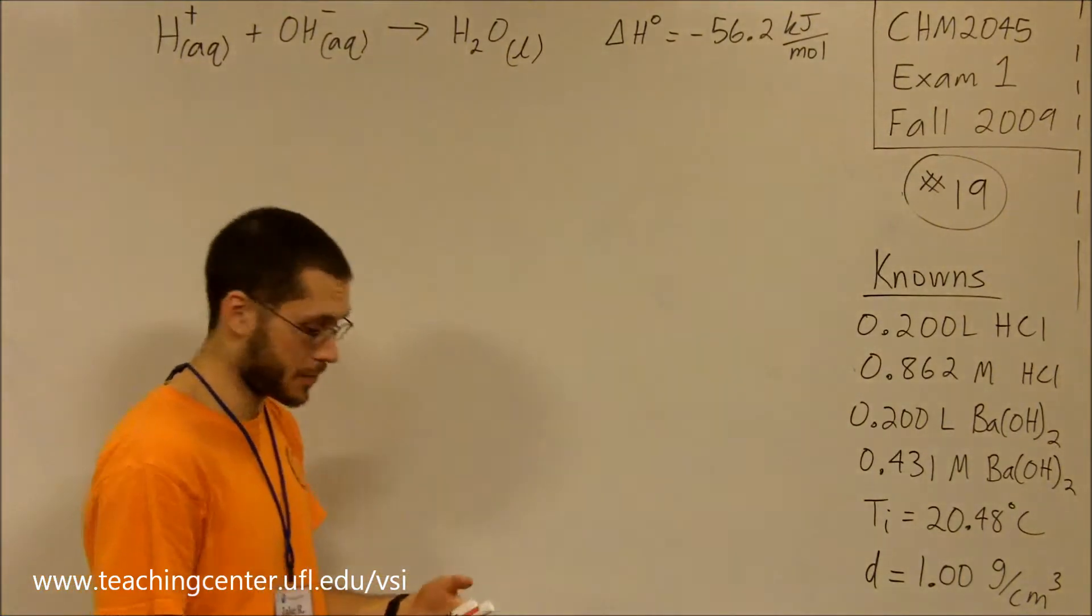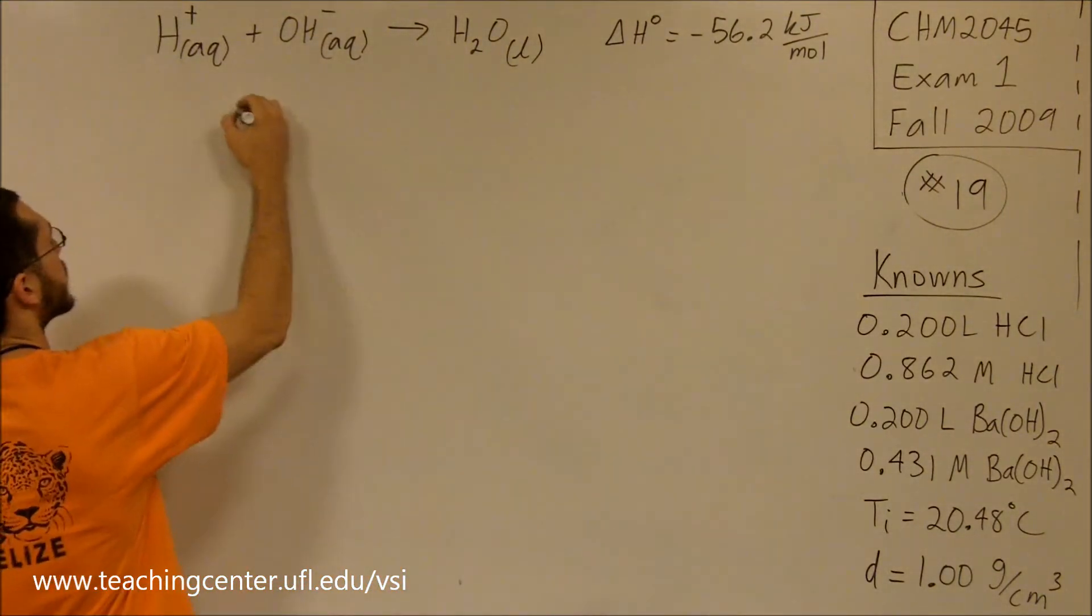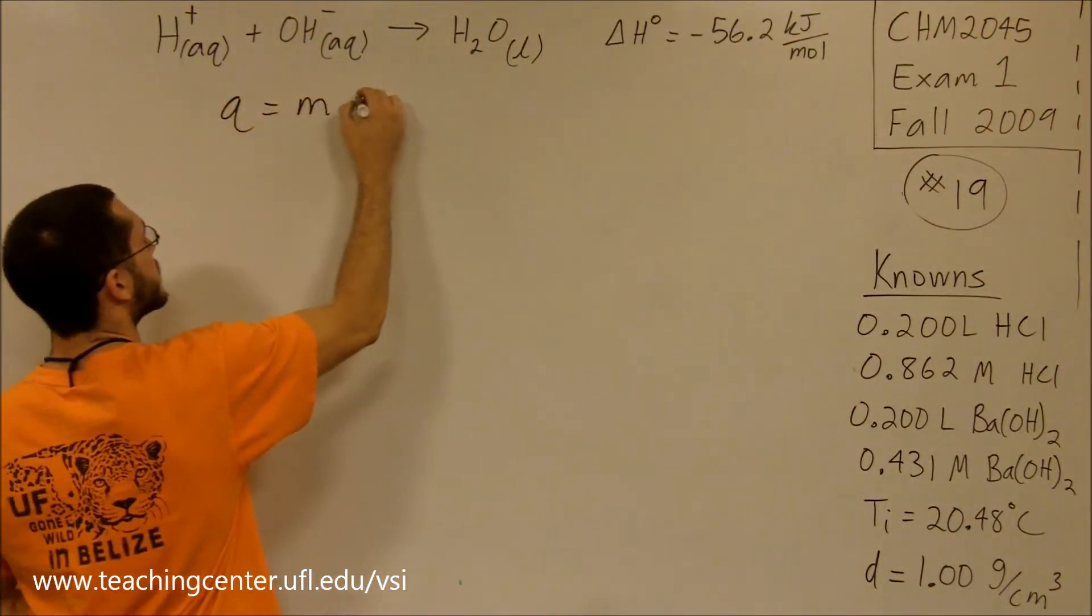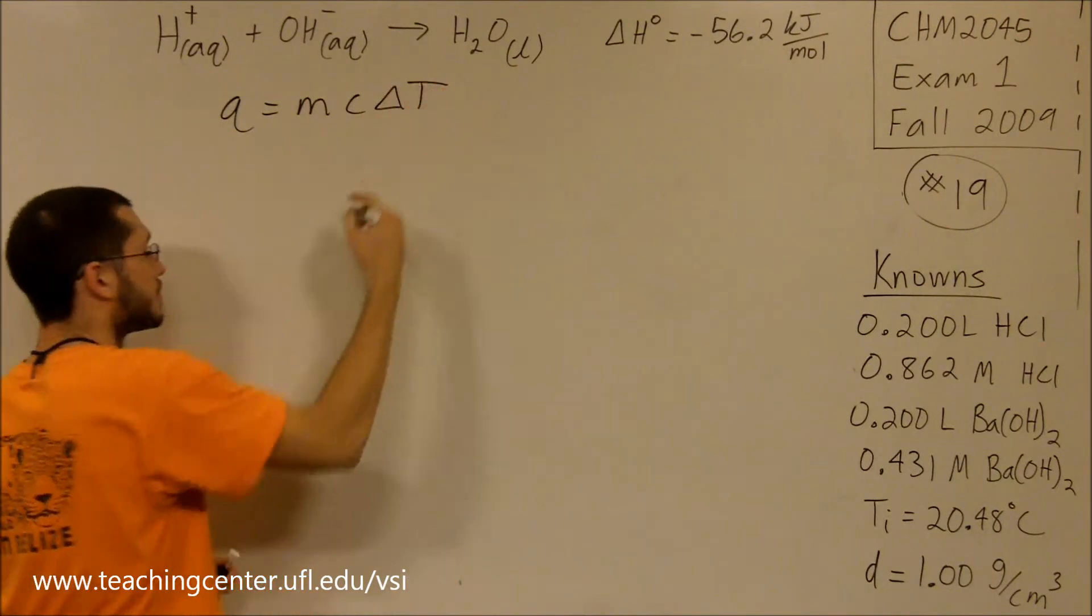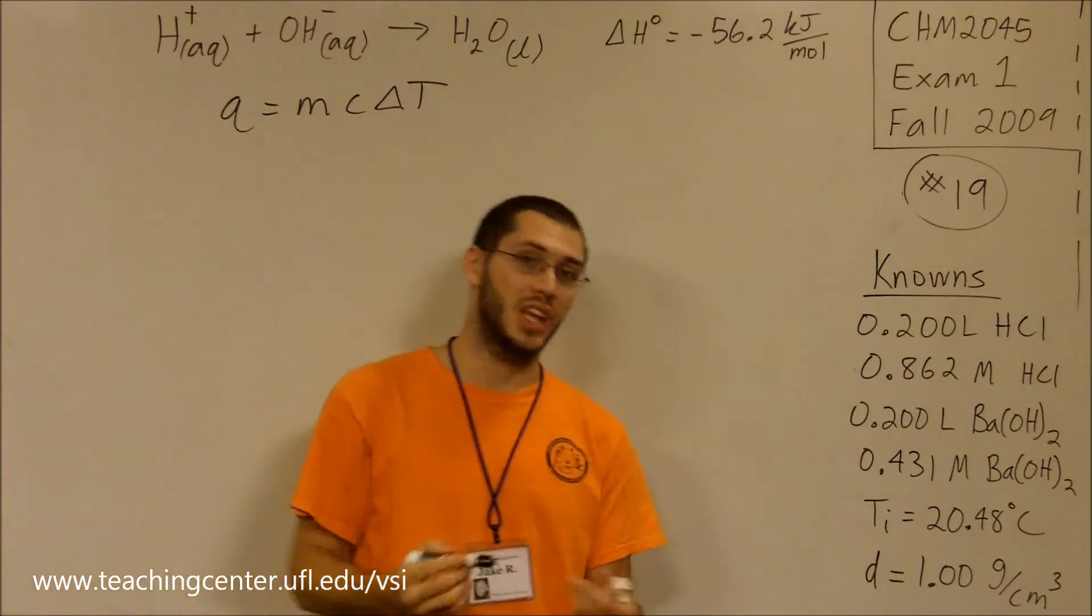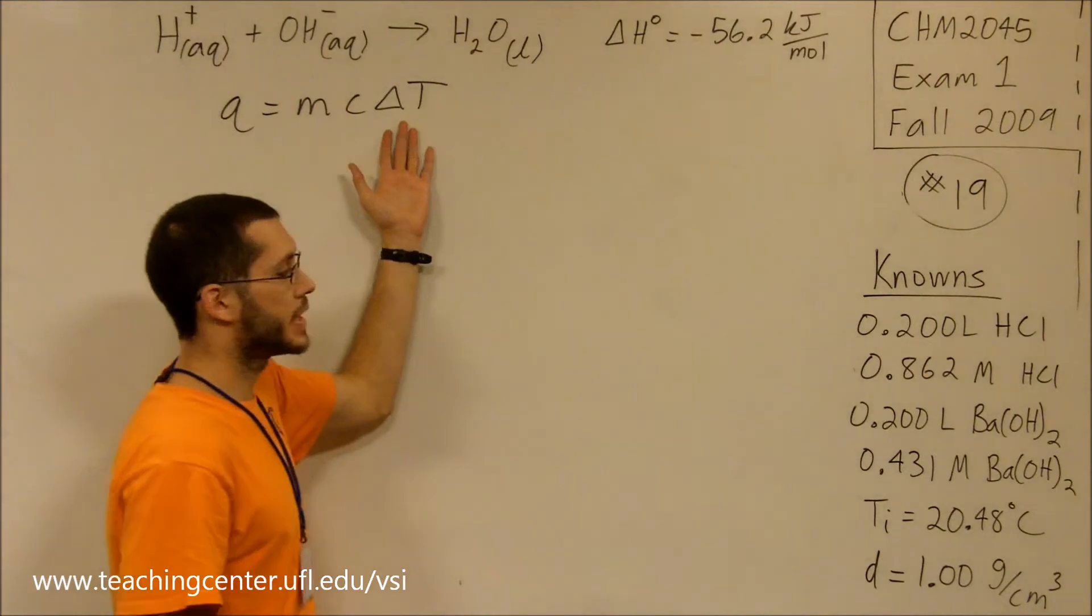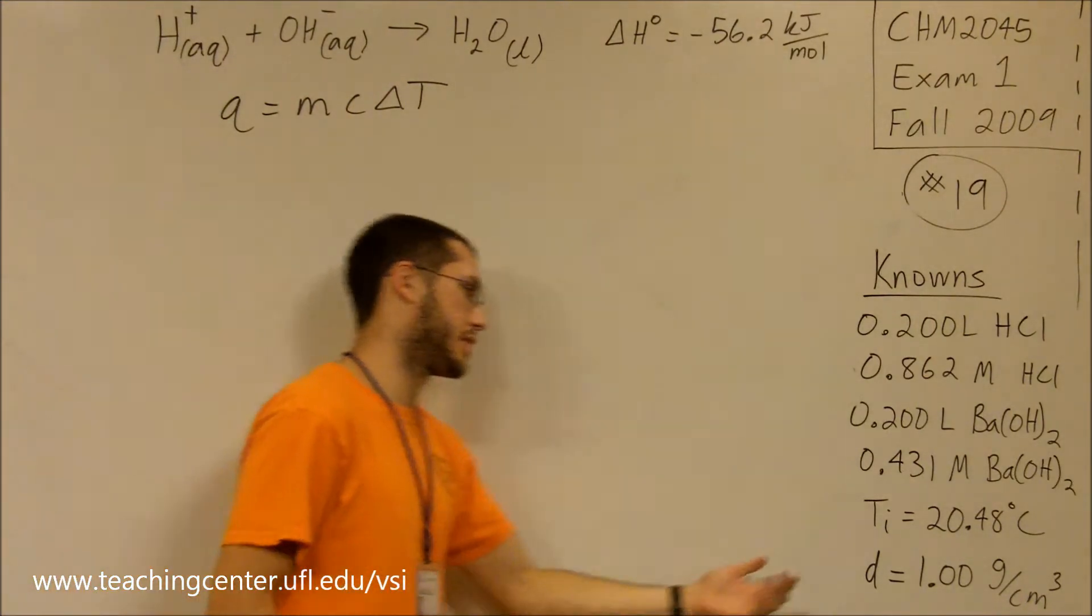What comes to my mind first is Q equals mc delta T, since it's an equation we've used a lot. It has delta T in it. We're looking for the final temperature, and we're given the initial temperature.